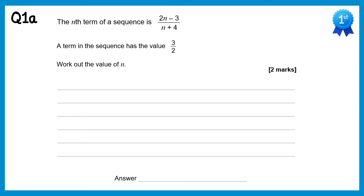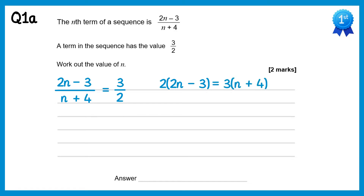For the first question we're told that one of the terms has a value of 3 over 2, so we write the nth term equals 3 over 2. If we cross multiply we get 2 lots of 2n minus 3 equals 3 lots of n plus 4. Expanding both sides gives 4n minus 6 equals 3n plus 12. Subtracting 3n gives n minus 6 equals 12, so n equals 18.